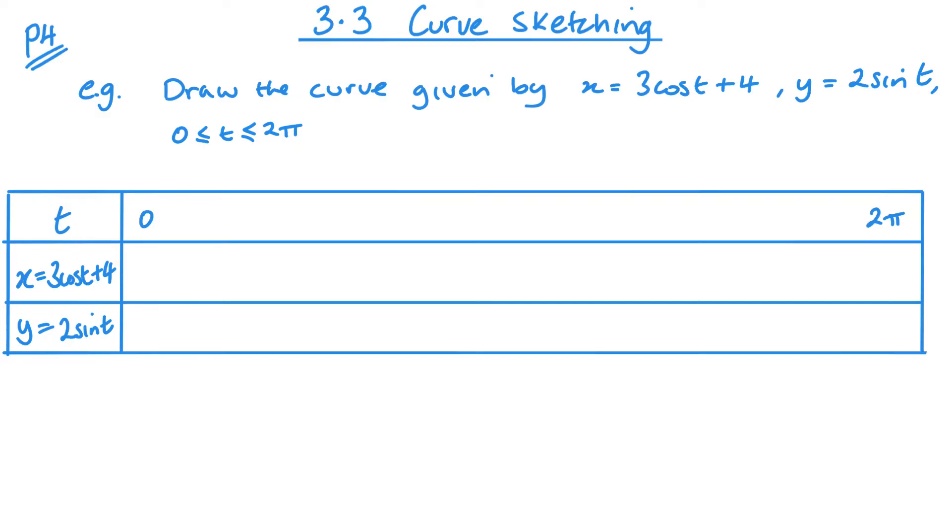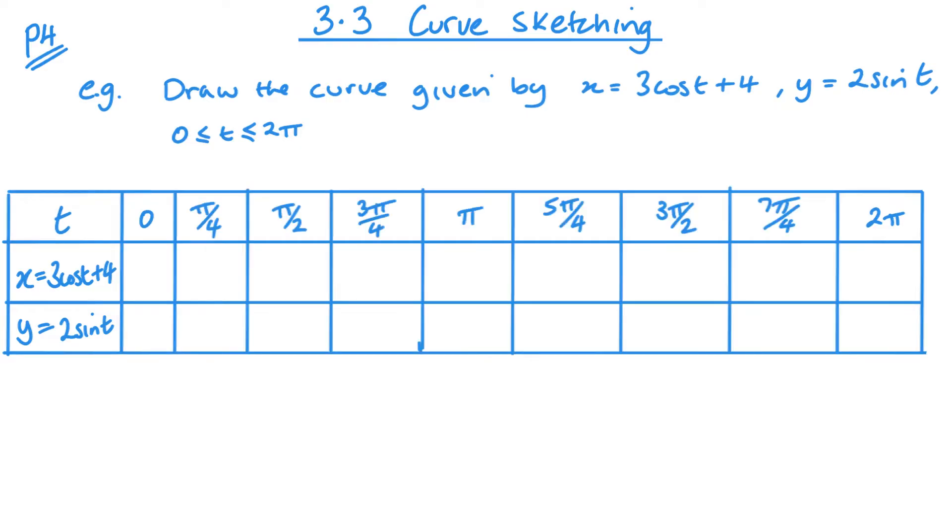Since we're dealing with sine and cos, going up in quarters should be fine. Obviously the more points you can do, the more accurate your graph will be. In some cases you will need more if you can't see the pattern. In other cases you can get away with less. It's almost like a trial and error bit where the more of these you do, the better at it you will get.